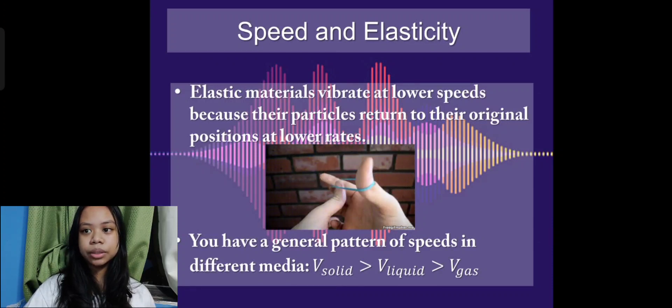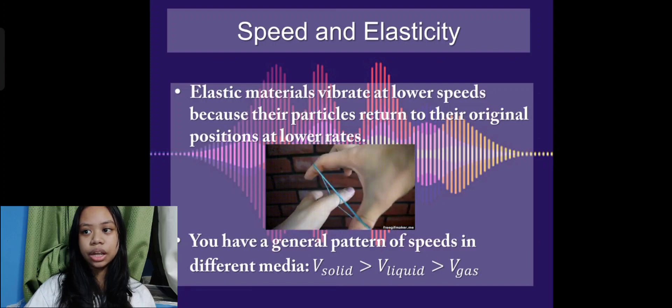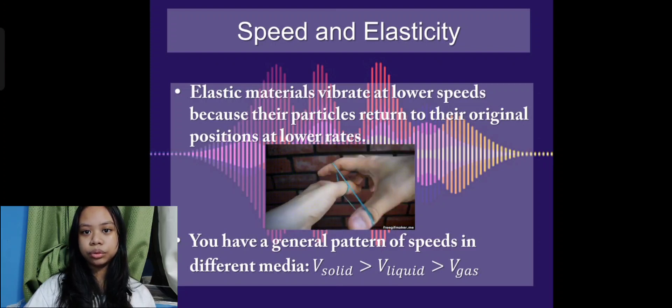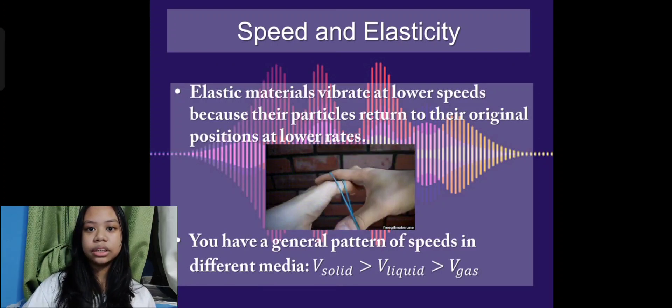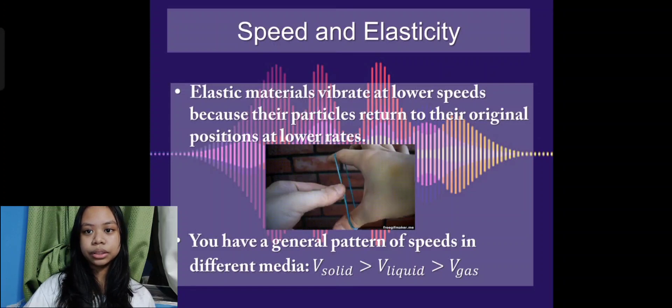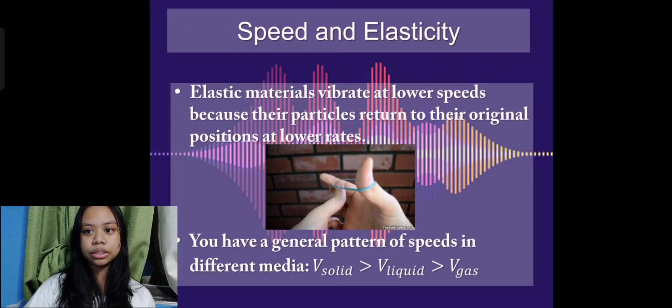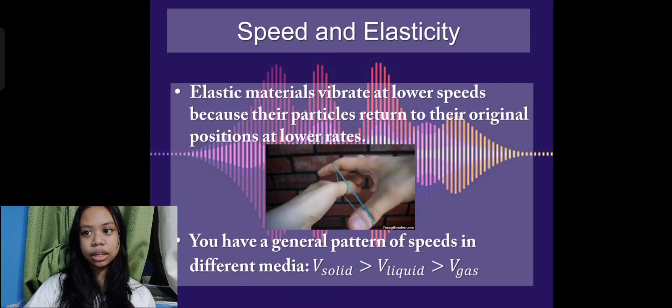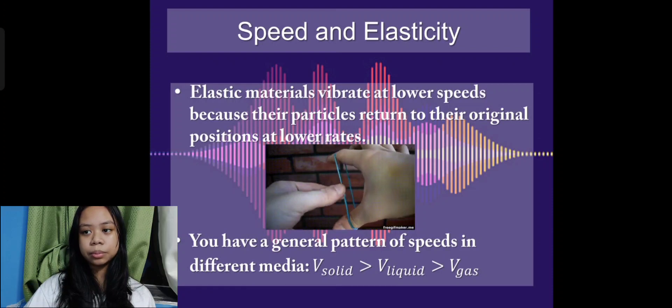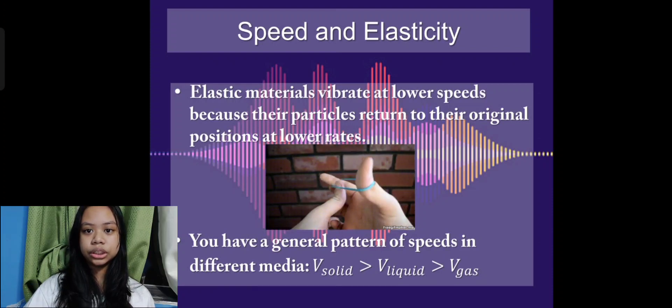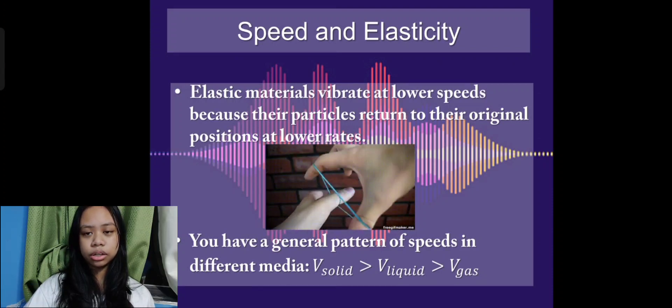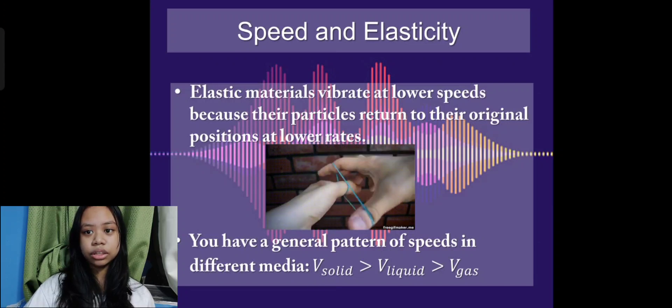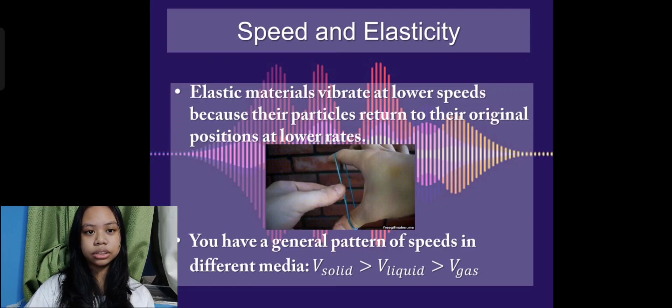In fact, this type of material such as rubber can be used for soundproofing. Generally, the elastic properties of a material have a greater influence on the speed of sound than density. But you have a general pattern of speed in different media, which is velocity of solid is greater than velocity of liquid and velocity of liquid is greater than velocity of gas.